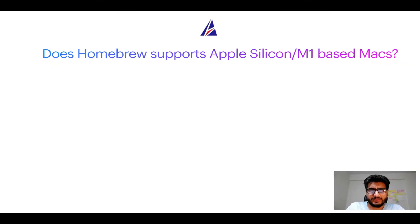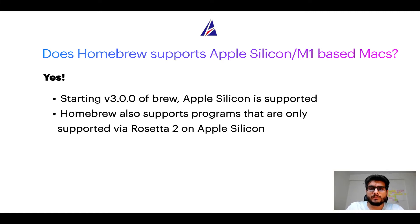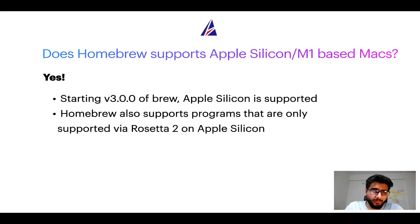Next question: can you use Homebrew to install programs on Apple silicon, or more popularly known as M1 MacBooks? Again, yes. Starting version 3.0 of brew, Apple silicon is now supported on Homebrew. In fact, Homebrew also supports programs that are at the moment only supported via Rosetta 2 on Apple silicon. Now that I have answered your questions on safety and compatibility of Homebrew, let's get to the installation process.